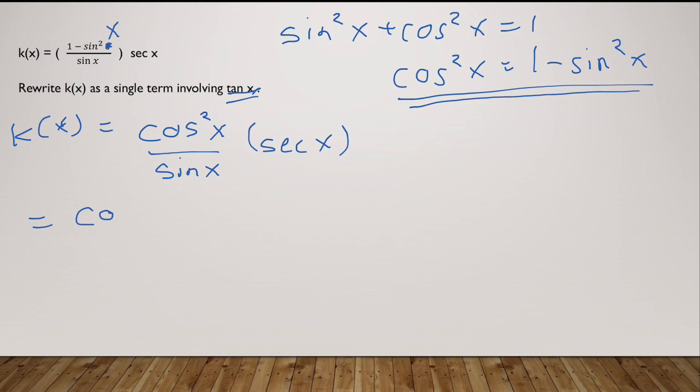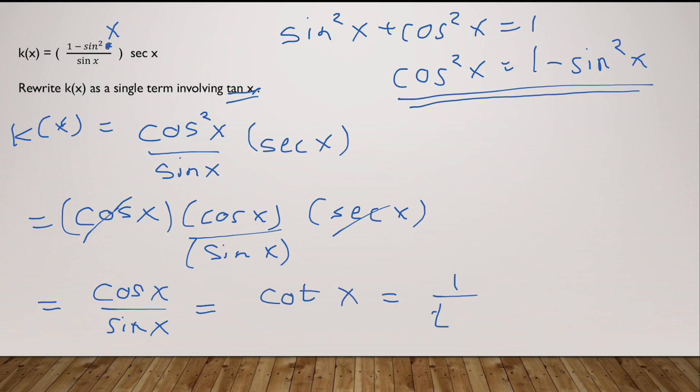Now if you are smart enough, which everyone is, you can write this as cos x times cos x upon sine x. Remember this entire thing is the same. I'm just rewriting cos square x as cos into cos times sec x. Now I know that cos x times sec are just 1, they value to just one because they are the reciprocals of each other. So I have cos x upon sine x which I get after cancelling these two, and cos x over sin x is cot x, but cot x is 1 over tan x, and there we go that is your beautiful answer 1 over tan x.